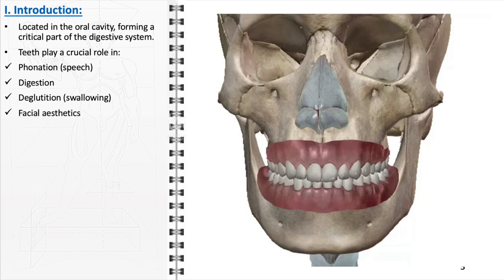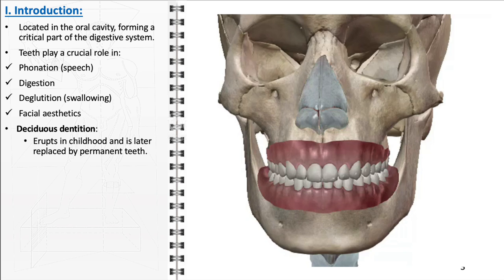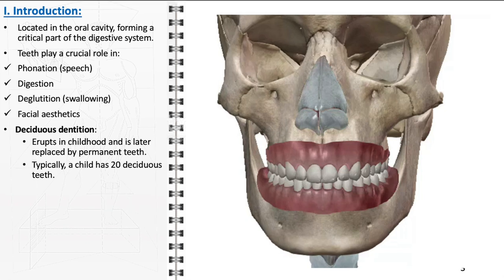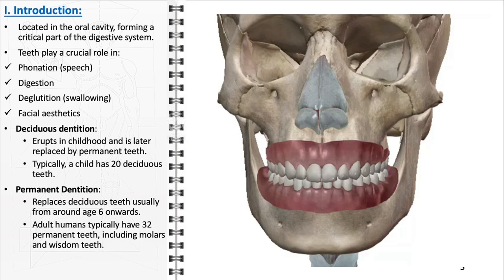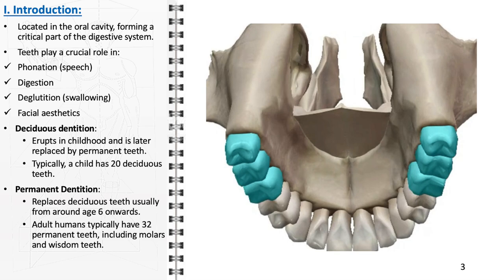Regarding dentition, there are two types: deciduous and permanent. Deciduous teeth, commonly known as baby or milk teeth, erupt in childhood and are later replaced by permanent teeth. A typical child has 20 deciduous teeth. The transition to permanent dentition usually begins around age 6. In adults, the permanent dentition comprises 32 teeth, which includes the molars and wisdom teeth.